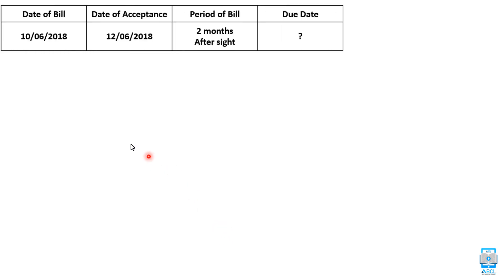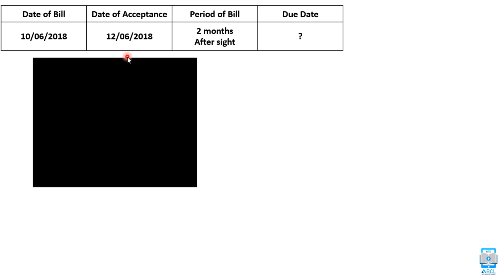Let's see another example. Again, date of bill, date of acceptance, and period are given, and we have to calculate the due date. Now in this question, calculation of due date will start from date of acceptance. Why? Because 'after sight' is mentioned in the question. Remember: if 'after sight' is given in the question, then calculation of due date starts from date of acceptance.